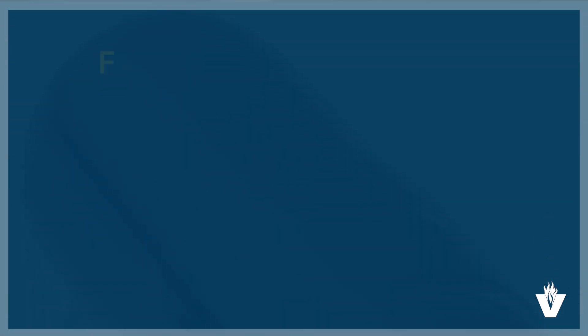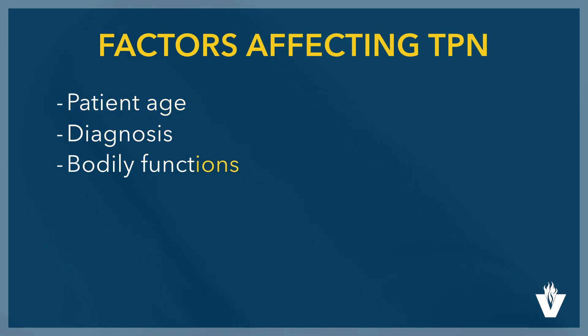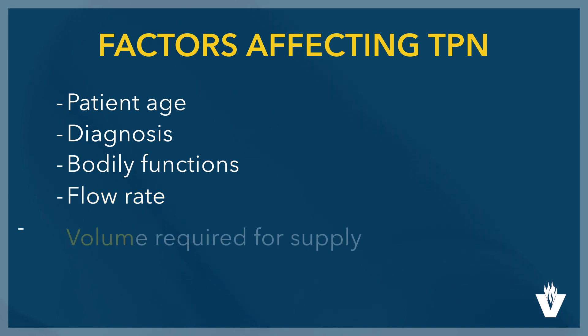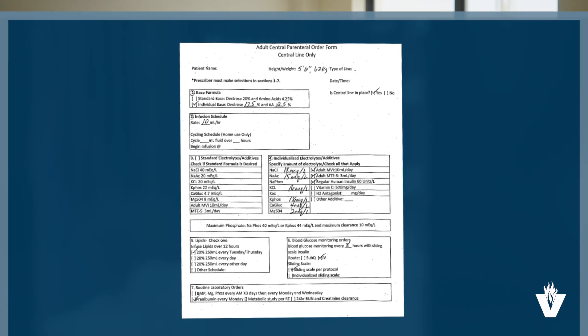There are many factors that go into prescribing a TPN, such as a patient's age, diagnosis, bodily functions, the flow rate at which the patient will receive the solution, the volume required for the 24-hour supply, and the medications the pharmacy has in stock. For the purpose of this video, we are going to work off a TPN order and do the calculations of the required medications based on what the pharmacy has.